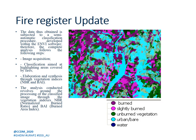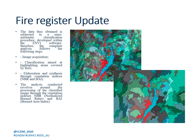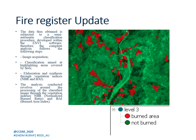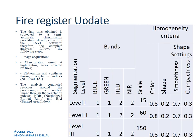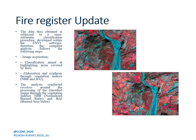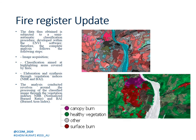Here we can see a classification of Landsat data, some segmentation at different levels, and another classification at Level 3 showing only Burned Area and Not Burned. A table with create ADR and settings for the segmentation is shown, along with the software settings for multi-resolution segmentation, segmentation of IKONOS data at different levels, and the classification of IKONOS data.